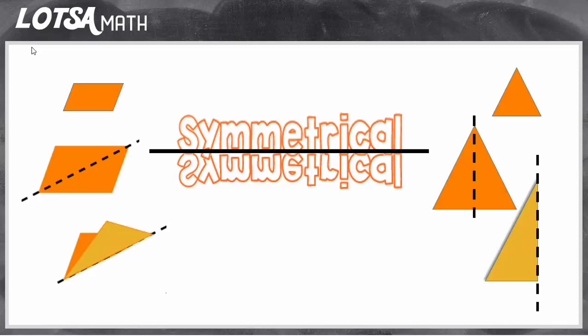Sometimes you can't really tell if a shape is going to be symmetrical or not. So one trick you can do is just fold it down the midline and if the two folds line up perfectly, then you know the shape is symmetrical.